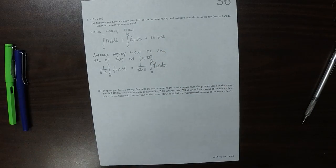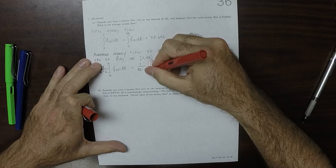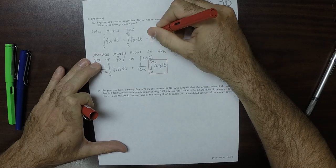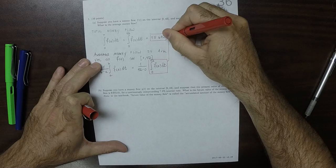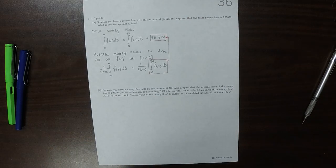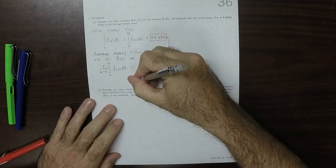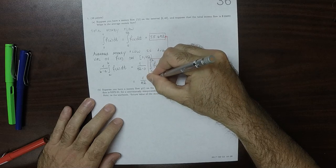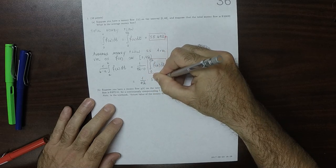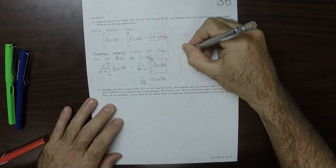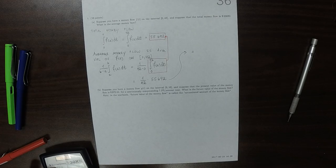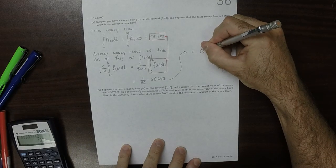But this value is this value. So this is 1 over 42, and then multiplied by 5,5692. And plugging that into the calculator, 5,9692 divided by 42 is 1326.